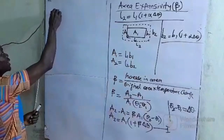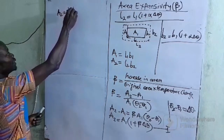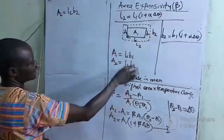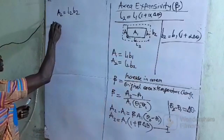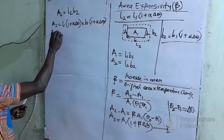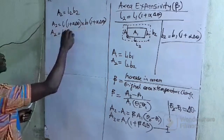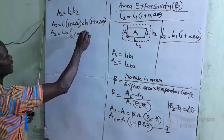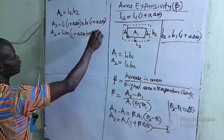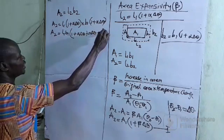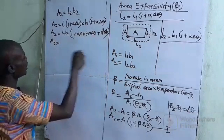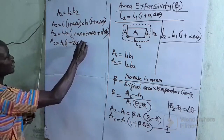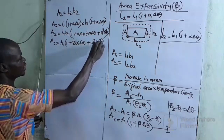From here we can see that A2 equals L2 multiplied by B2, the length and the breadth. Substituting, A2 equals L1·B1 times (1 + α·Δθ)(1 + α·Δθ). Expanding the brackets: 1 times 1 is 1, plus alpha·Δθ, plus alpha·Δθ again, plus alpha-squared times Δθ-squared. Since L1·B1 equals A1, this gives A1 times (1 + 2α·Δθ + α²·Δθ²).